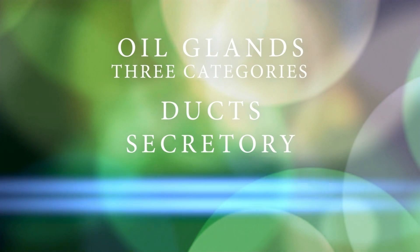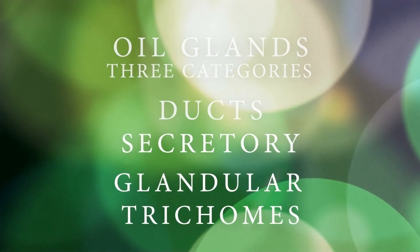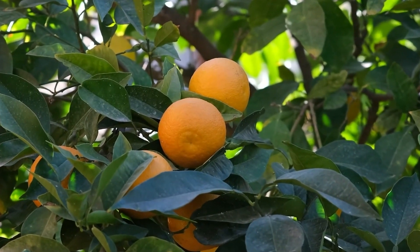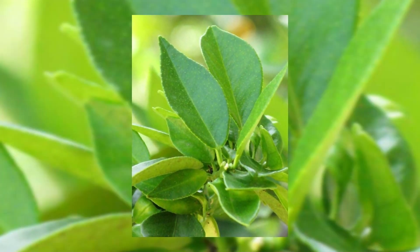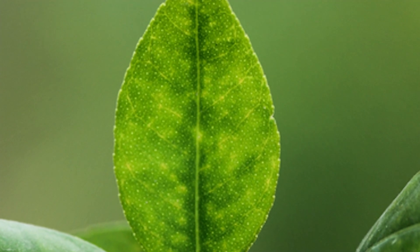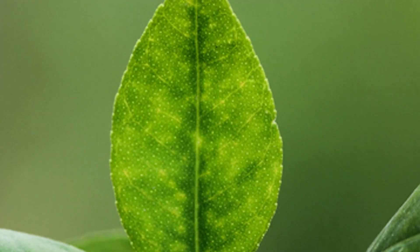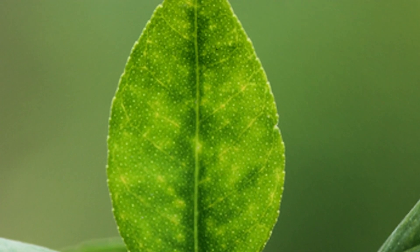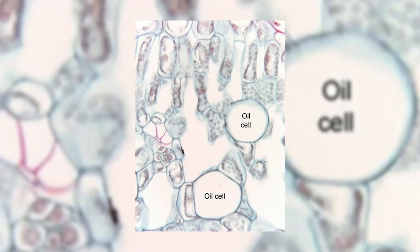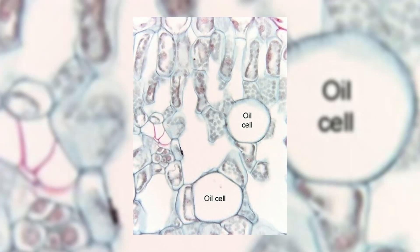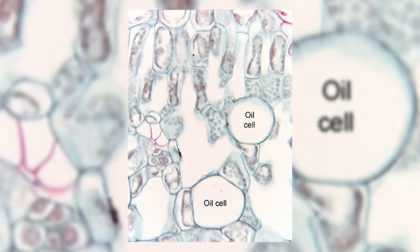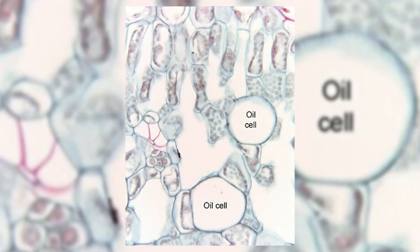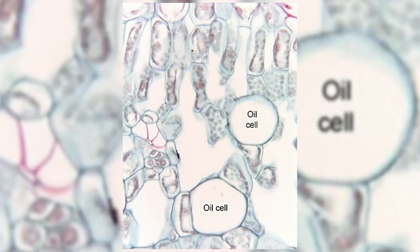The third category is the glandular trichomes, and these are found on the outside of the leaf. On an orange tree, the leaf contains tiny little glands which are where we get Petitgrain essential oil from. If you hold the leaf up to the light you can see these tiny little ducts — that's in fact where it gets its name. The simplest structure consists of one single cell, as seen in these magnolia leaves.